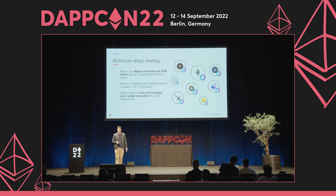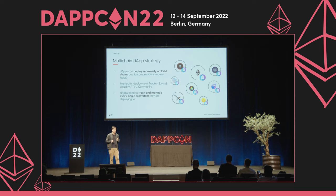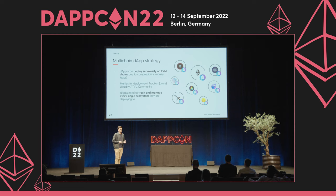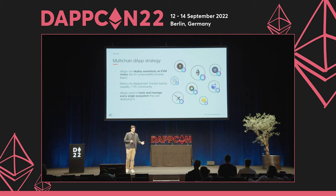When we talk to these applications, most of them say that in order to fully deploy to a new EVM-compatible chain, they're looking for traction in terms of users, liquidity in terms of TVL, a great community, help from the team, and especially developer revenue. But the main complexity is that they need to track and manage every single ecosystem they're deploying to, and some teams require an initial payout to offset the deployment cost.